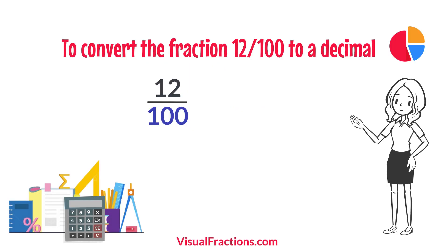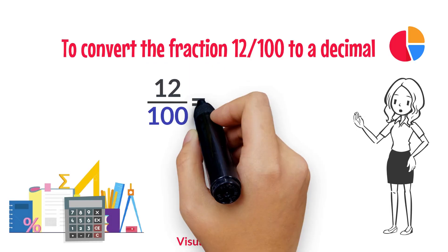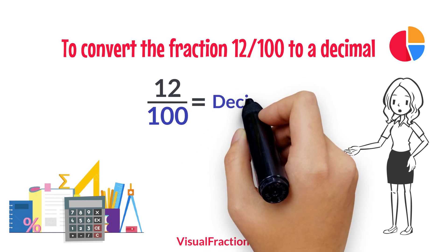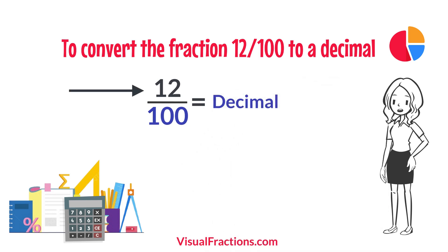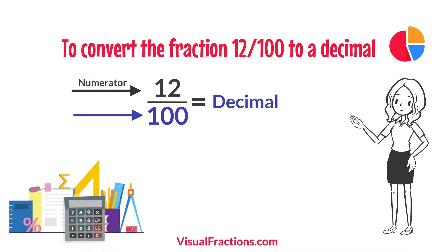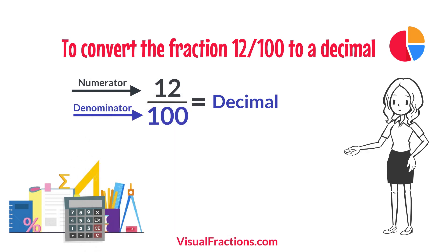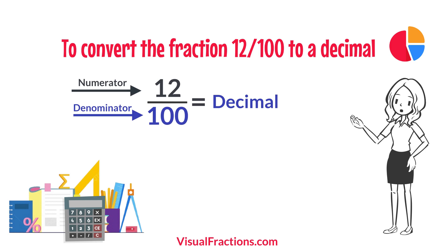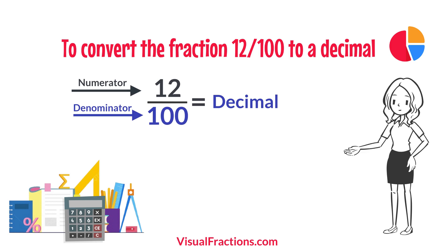To convert the fraction 12 one hundredths to a decimal, all we need to do is divide the numerator, the top number, by the denominator, the bottom number. So, we simply divide 12 by 100. The answer we get is 0.12.